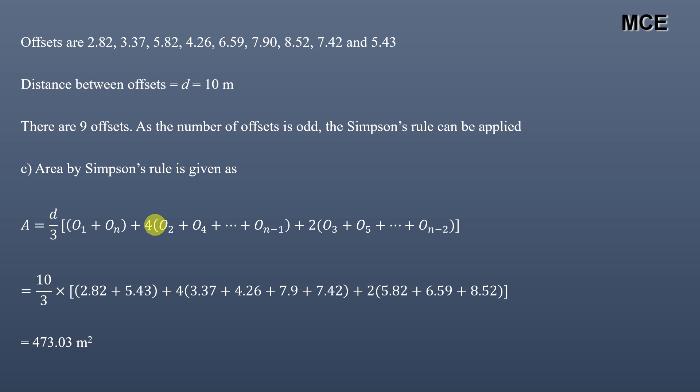Remember that Simpson's rule is more accurate than the trapezoidal rule and the average ordinate rule. So if you need to calculate area more precisely, use Simpson's rule. This is how you can find the area of an irregular boundary using these three methods — you just need the perpendicular offsets from a defined survey line to the irregular boundary. I hope this video was clear. If you found it helpful, subscribe to the channel and share. Thanks for watching Master Civil Engineering, and stay tuned.